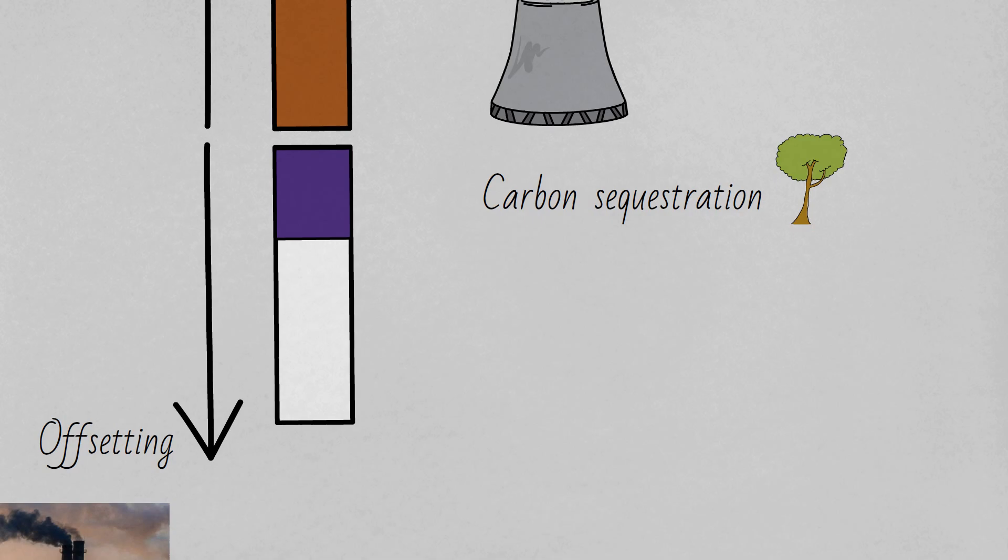The second way of carbon offsetting is preventing future carbon emissions by supporting projects which will have that effect, such as investing in renewable or green energy.